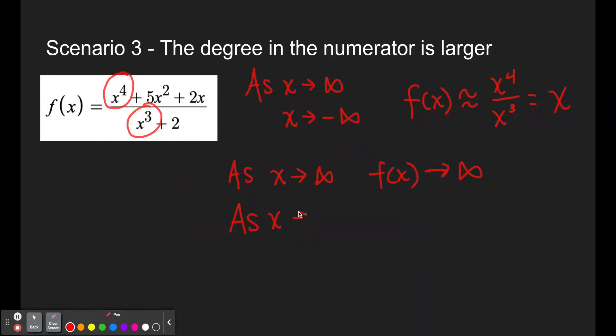As x approaches negative infinity, again, because f of x behaves just like what x is, f of x is going to approach negative infinity. So this is the first scenario we're seeing where they don't agree, and that happens sometimes to your end behavior.